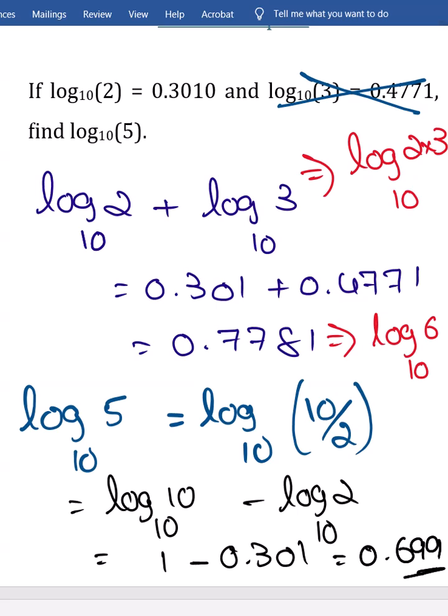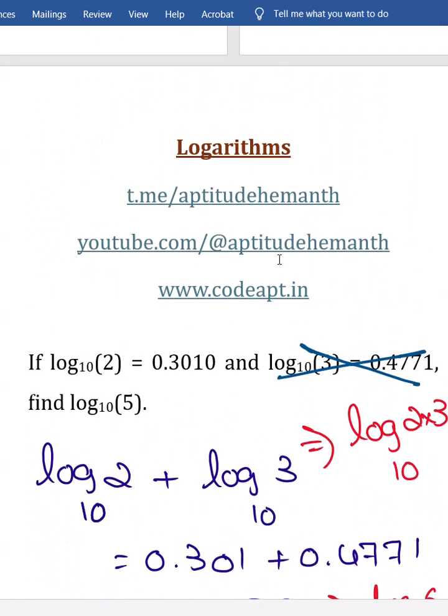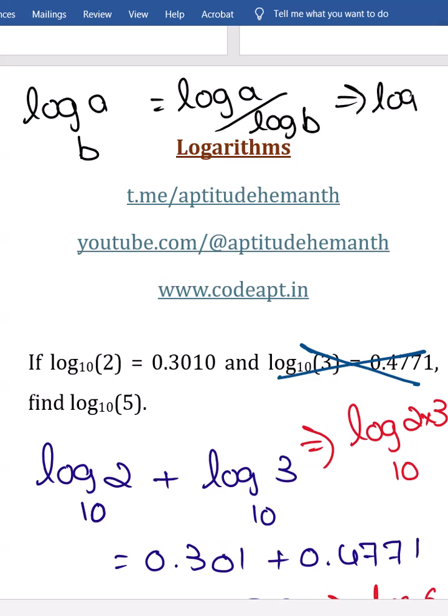So some of you have a question like sir, how can you consider log 10 base 10 equal to 1. See log a base b is nothing but log a divided by log b. So log 10 base 10 is nothing but log 10 divided by log 10 which will get cancelled and it is nothing but equal to 1.